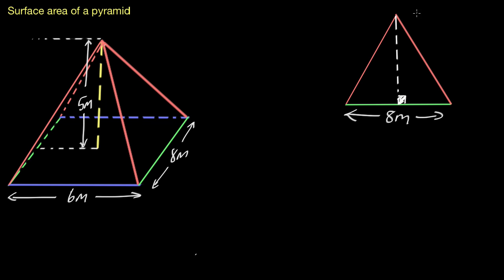What is the area of a triangle? It's half times base times the perpendicular height. We've got our base length there, but we don't have the height. You need to ask yourself: where do I get that height from? If you come back to the pyramid, we need the height that runs up the face of that triangle.